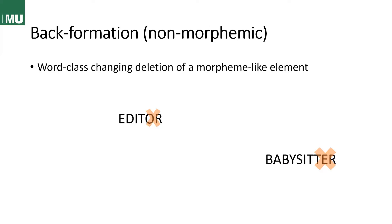Then we have backformation, a non-morphemic word formation process as well. In that case, we delete a morpheme-like element from a word to create a new lexeme in a different word class. It's important to understand that the long forms were there before the short forms. So we have 'editor' — and someday somebody thought they needed a verb for that, cut the -or away, and came up with 'to edit.' And the same goes for 'babysit' — 'babysitter' is actually the older form, and then the -ter was just cut away to make a verb.